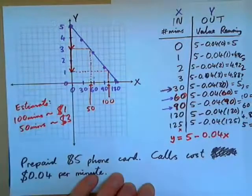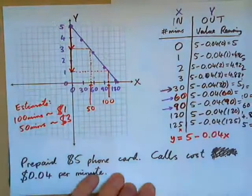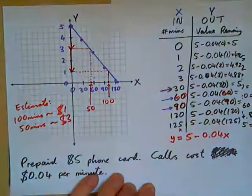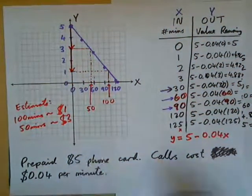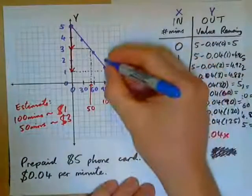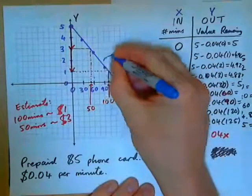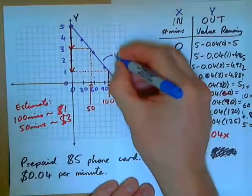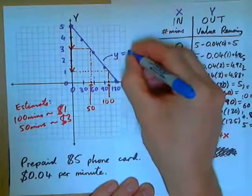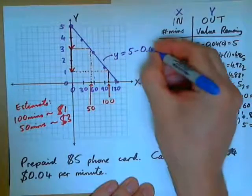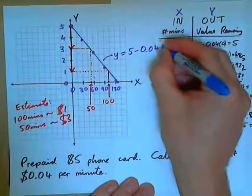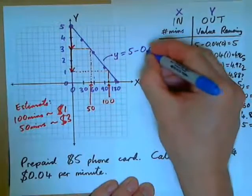We can label our graph like that. Y equals 5 minus 0.04 times the input.